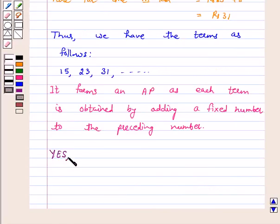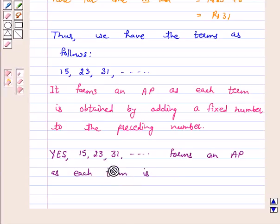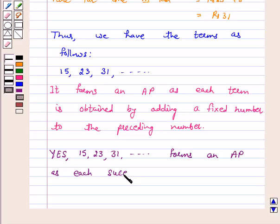The above situation forms an arithmetic progression with terms 15, 23, 31. This forms an AP as each succeeding term is obtained by adding 8 to its preceding term.